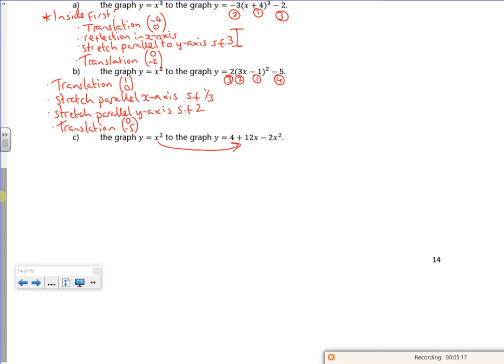Unless of course you do completing the square. So if I do completing the square, if I take out -2, I've got x² - 6x + 4. Then I've got -2 lots of (x - 3)² plus 18 plus 4 is plus 22. There.